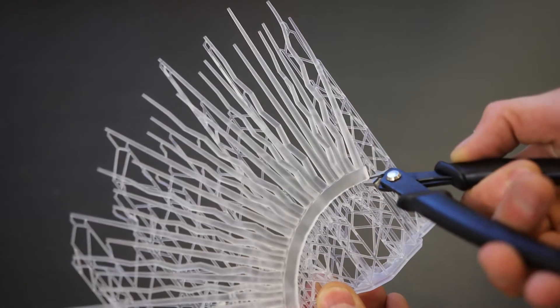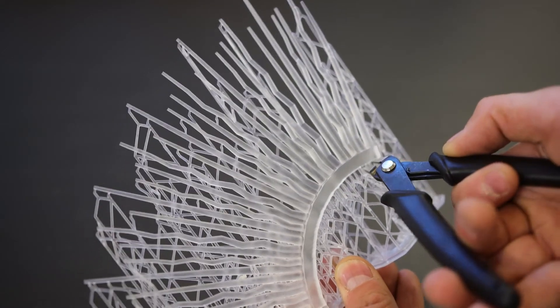Supports for this type of printing process are tree-like and can be removed with a pair of side cutters.